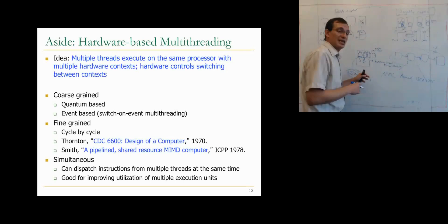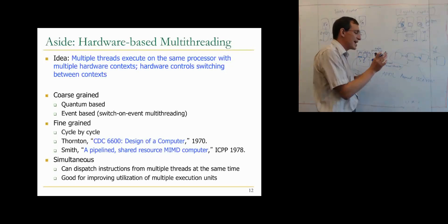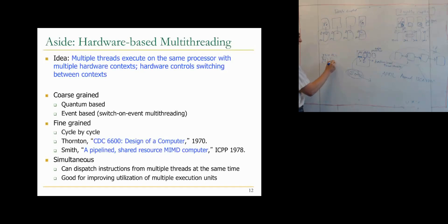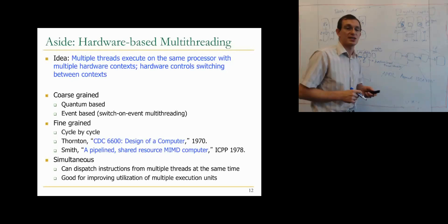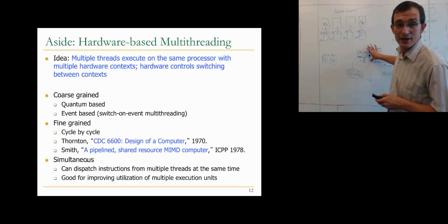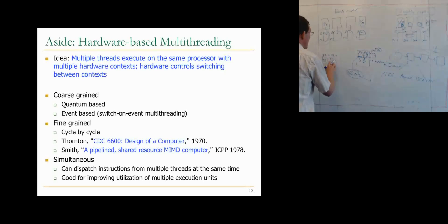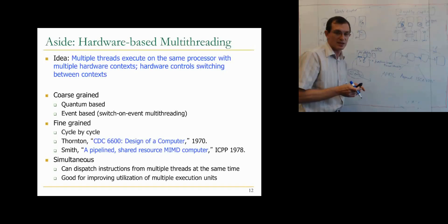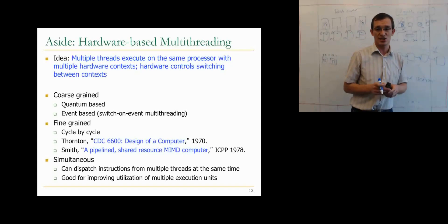Simultaneous multi-threading differs in that you can execute instructions from different threads simultaneously in different functional units — functional unit 0 executes instructions from thread 0, functional unit 1 from thread 1 — concurrently scheduled. This improves utilization of multiple execution units. With fine-grained multi-threading, if a thread has only one instruction to execute, the second functional unit goes empty. Simultaneous multi-threading enables functional units to be utilized by scheduling from another thread, though it requires higher hardware costs. Existing out-of-order processors can do this relatively easily with some additions.